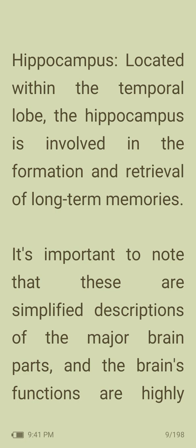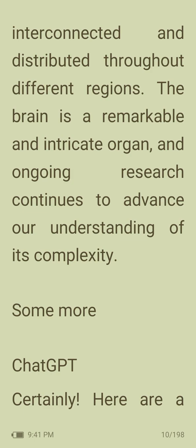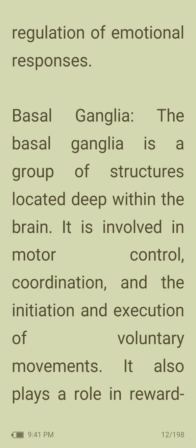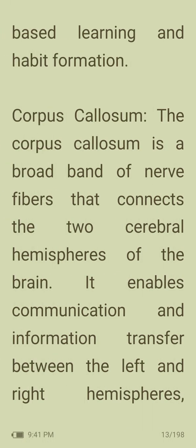Hippocampus: located within the temporal lobe, the hippocampus is involved in the formation and retrieval of long-term memories. Amygdala: located deep within the temporal lobe, the amygdala plays a key role in processing emotions, particularly fear and aggression, and is involved in the formation of emotional memories and regulation of emotional responses. Basal ganglia: a group of structures located deep within the brain involved in motor control, coordination, initiation and execution of voluntary movements, as well as reward-based learning and habit formation.